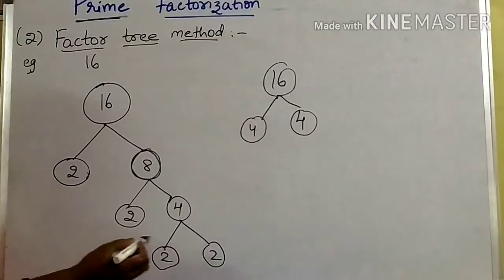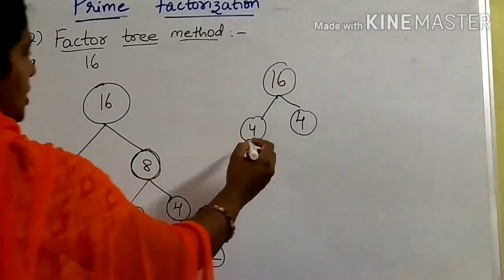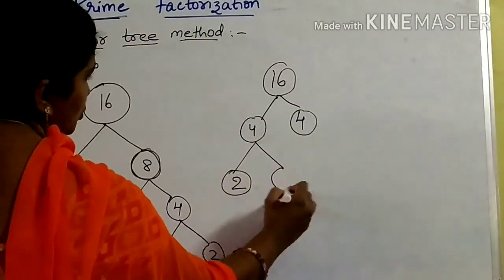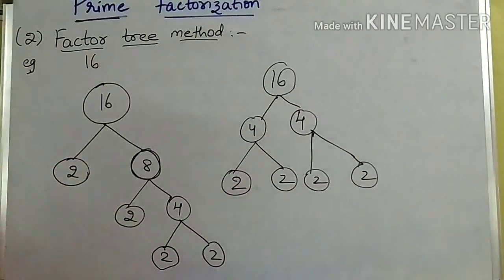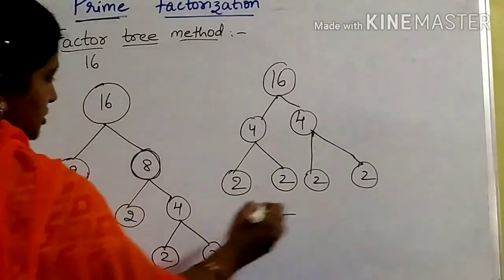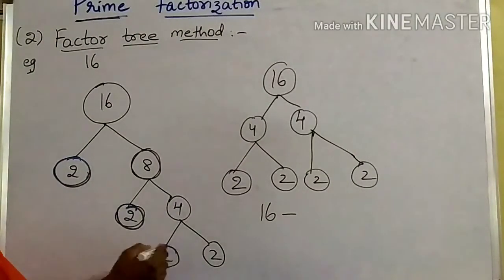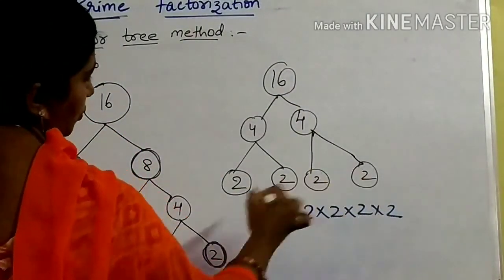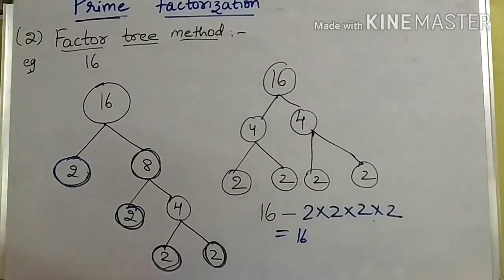We repeat the process until we get only prime factors for all composite factors. Here, 4 is a composite factor, so write 4 as 2 times 2. Now all factors — 2, 2, 2, 2 — are prime factors. You can also write 16 as 4 times 4. Both 4s are composite, so write each 4 as 2 times 2. Again you get 2, 2, 2, 2 — all prime factors. So the prime factorization of 16 is 2 into 2 into 2 into 2, and 2 times 2 is 4, 4 times 2 is 8, 8 times 2 is 16.